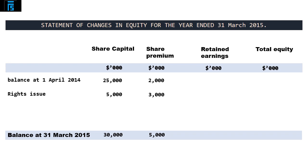The retained earnings total, as stated in the trial balance, is $8,600, and this is expressed as at the beginning of the year, so we may insert this number directly into the first row of the statement of changes in equity. When we total the three opening entries, we arrive at $35,600.